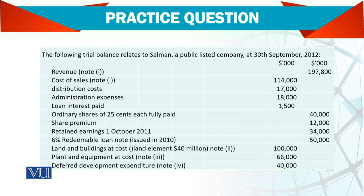A note has been given because there is an adjustment here. For plant, one is the normal plant you use, and another is the plant you take out and hold for sale — so there will be an adjustment for that. Development expenditure: if you are developing a project, a product, or a formula, and the project later becomes feasible, then you capitalize those costs. There is a separate standard for this which we have not fully studied, but I will give you a brief overview.